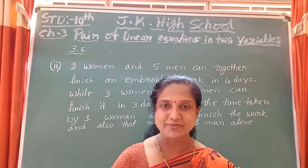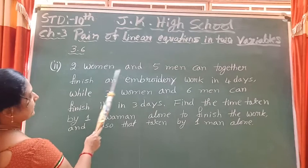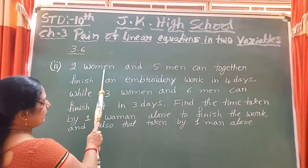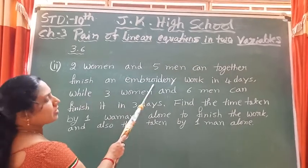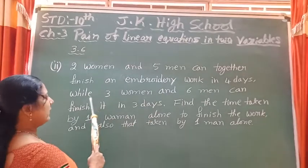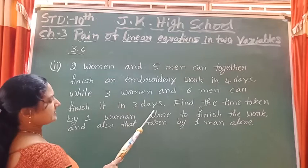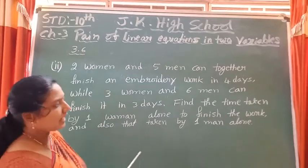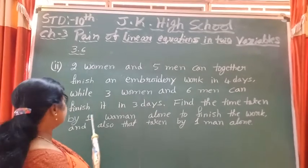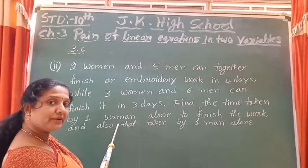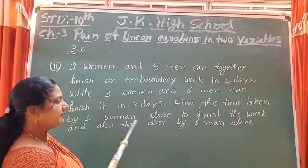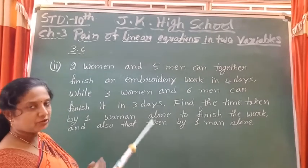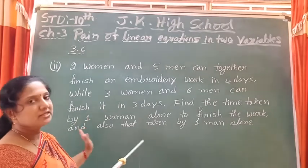Second question: 2 women and 5 men can together finish an embroidery work in 4 days, while 3 women and 6 men can finish it in 3 days. Find the time taken by one woman alone to finish the work, and also the time taken by one man alone. Let the time taken by one woman alone be x days and by one man alone be y days.